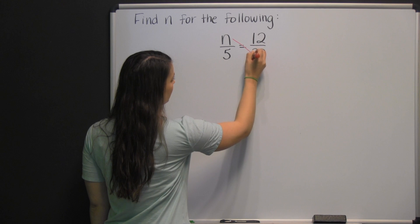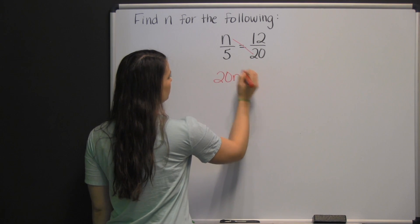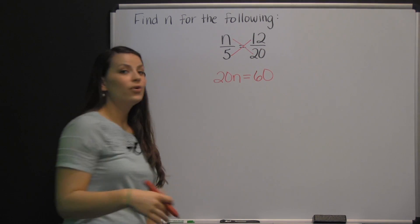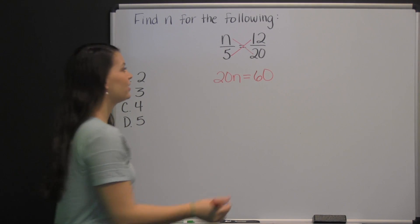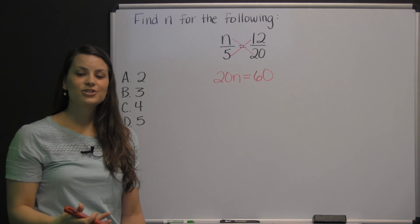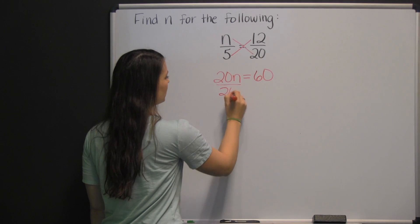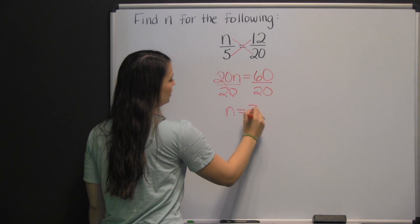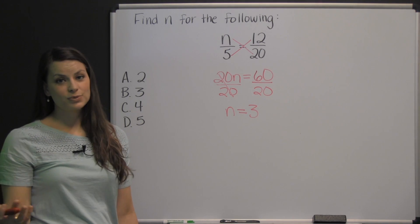We multiply N times twenty, which is twenty N, and that equals five times twelve, which is sixty. Hopefully you can see why it's called cross multiplication — you multiply across. Now we solve this equation by undoing what's being done to our variable, which means dividing both sides by twenty. So N is equal to three. That's one method for solving proportions, and it always works.